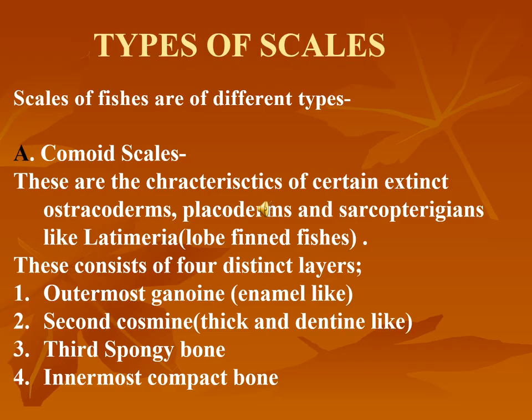Five types of dermal scales have been identified in fishes. They are cosmoid, placoid, ganoid, cycloid, and ctenoid scales. The first scale I am going to talk about is the placoid scale. These scales do not occur in living fishes; they were the characteristics of certain ostracoderms, placoderms, and extinct sarcopterygians.